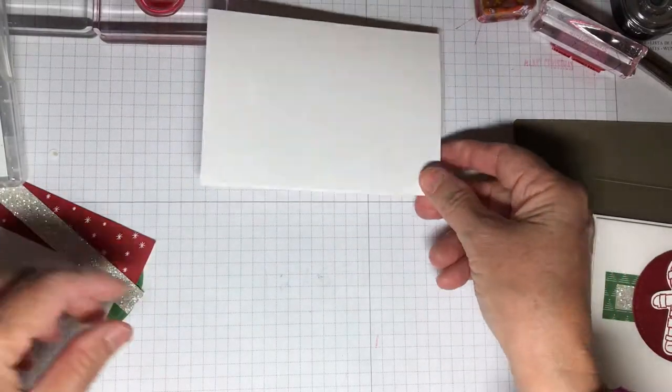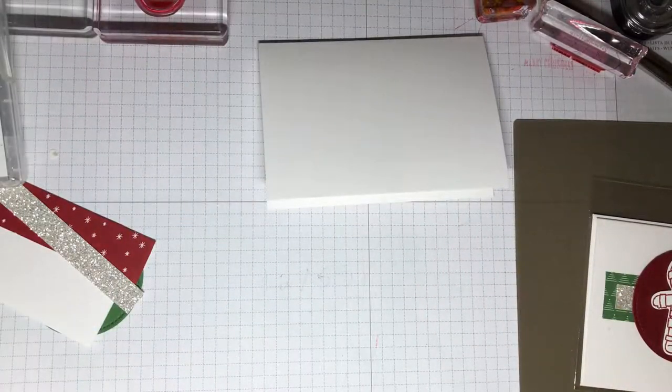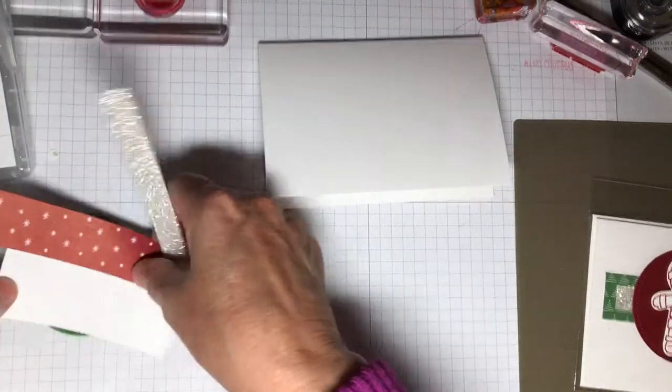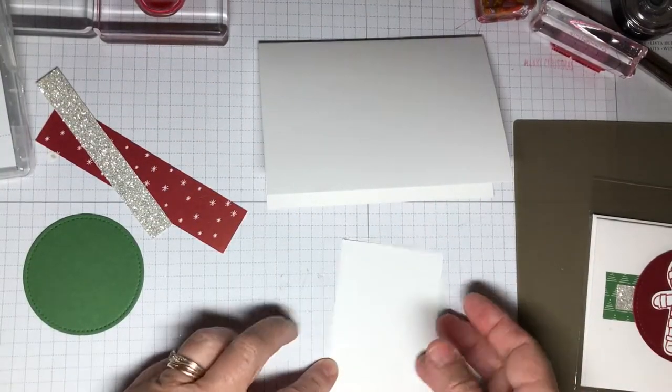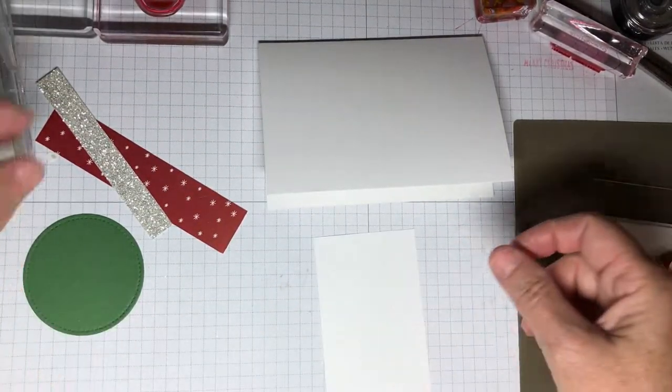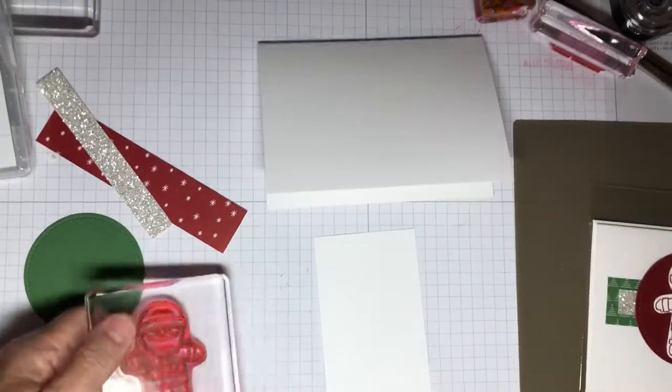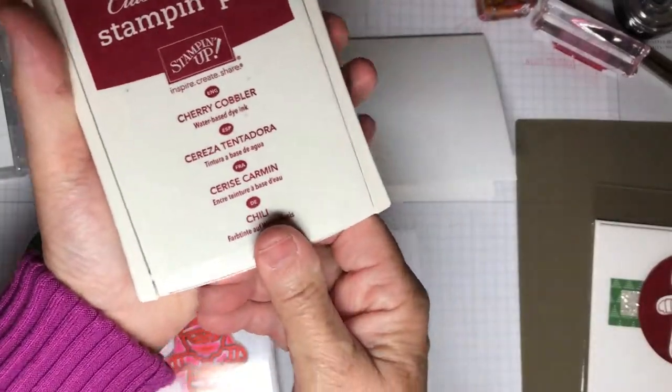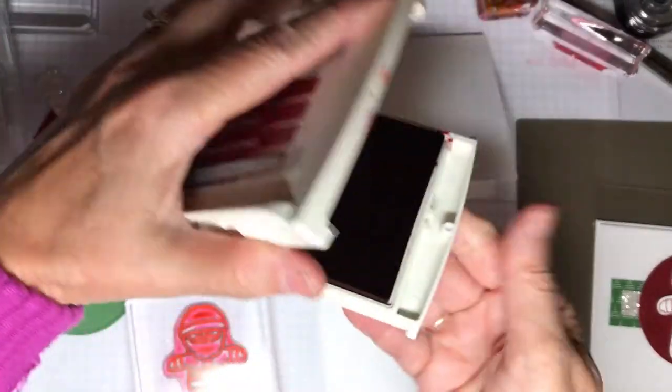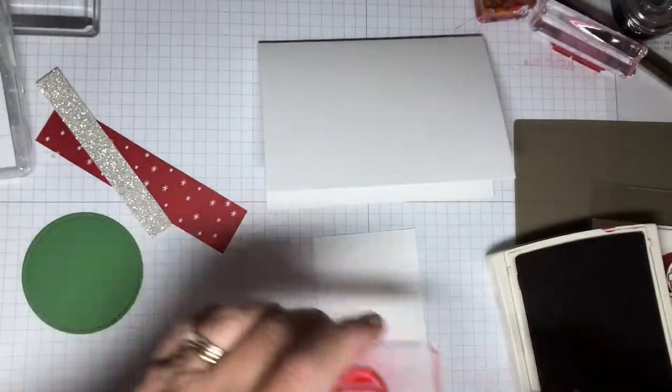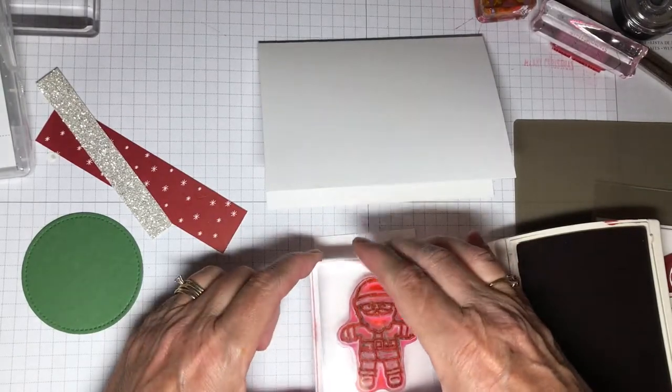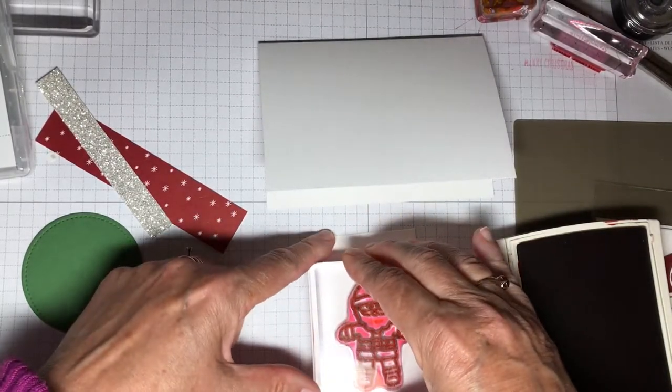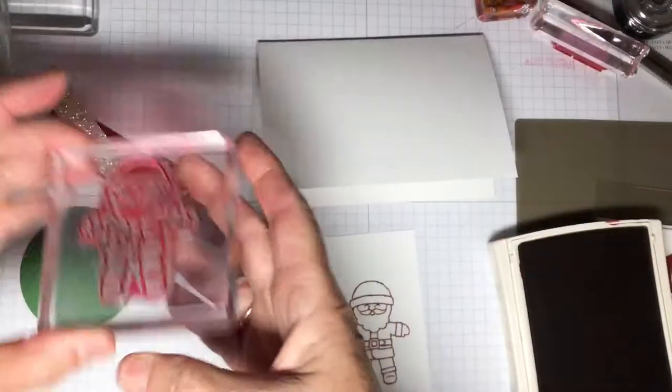So the first step will be to find our little piece of whisper white cardstock here, and we're going to take that cherry cobbler ink, ink up the stamp. Blah, isn't that wonderful?